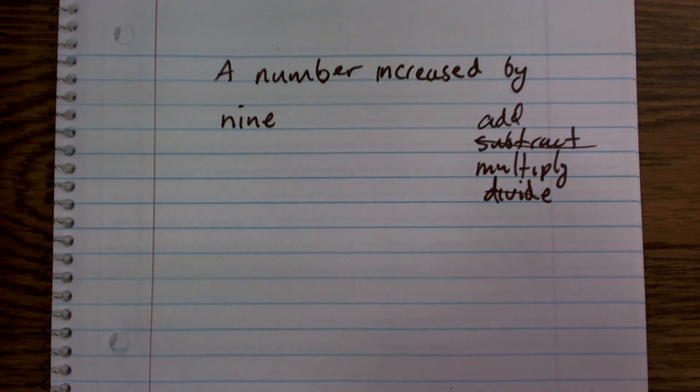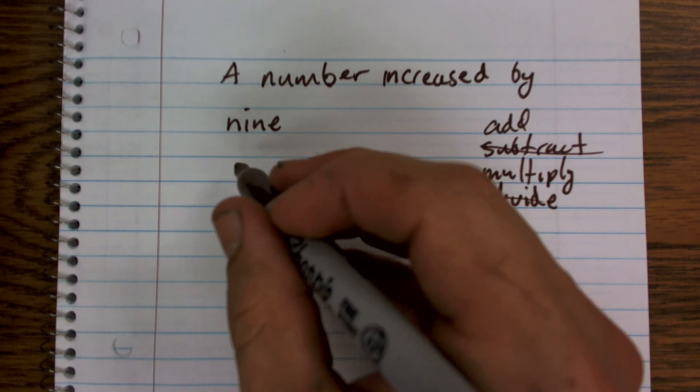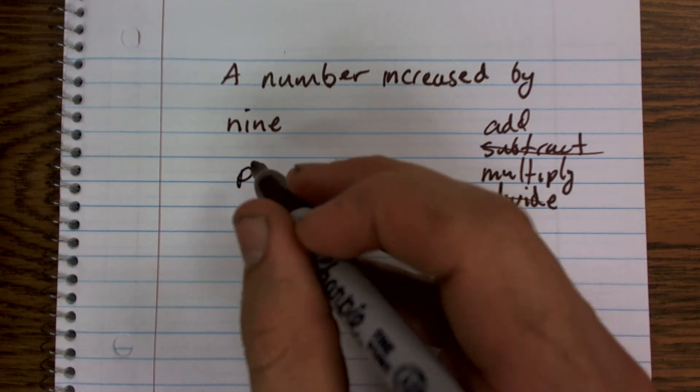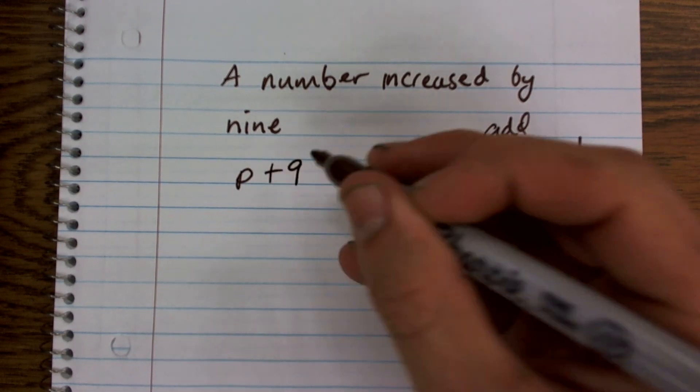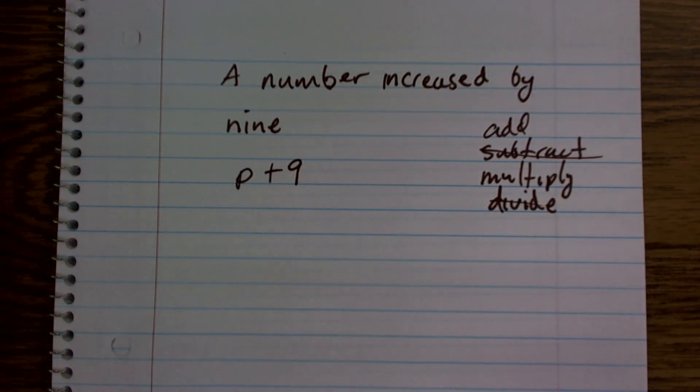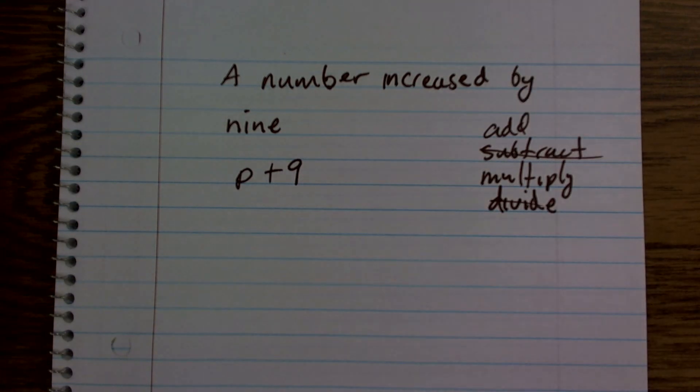So when it says a number, first of all, I don't know what a number is. So I need to use a variable. And I'm going to use an algebraic variable for this. I'm going to use my number to be p. So p is going to represent my number. And when it's increased by 9, I'm just going to write p plus 9. And that's how you write from an algebraic sentence into algebraic equation or expression.